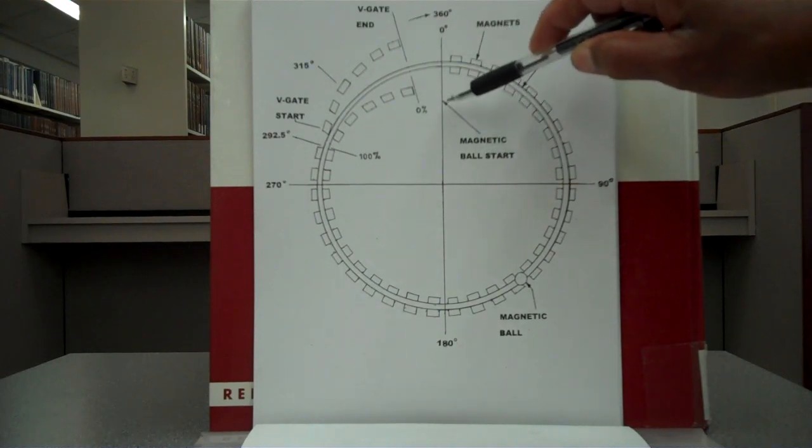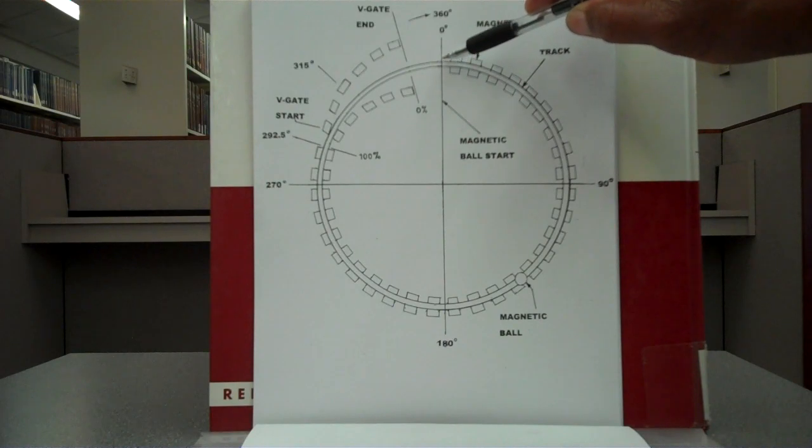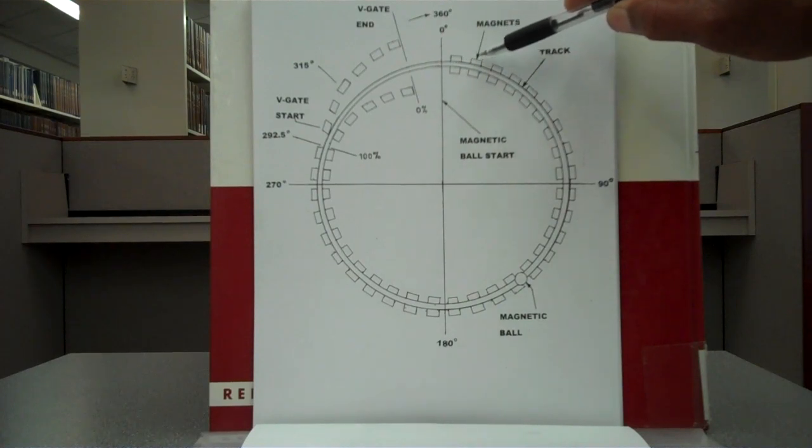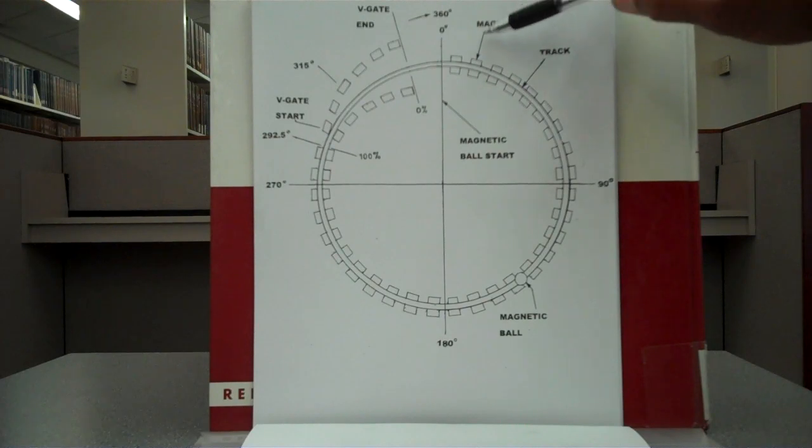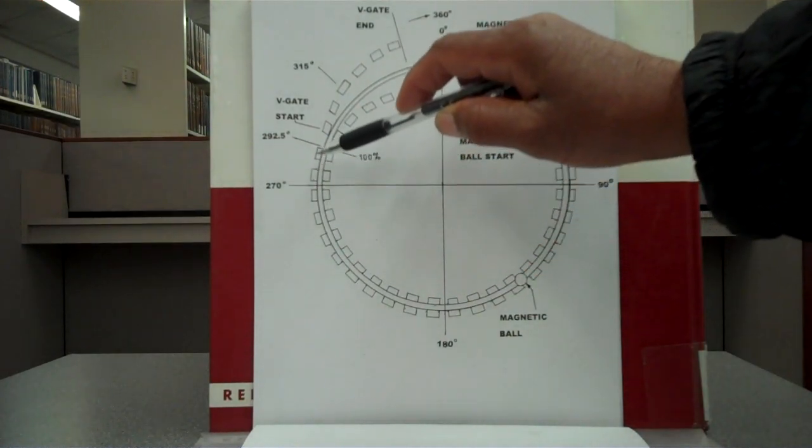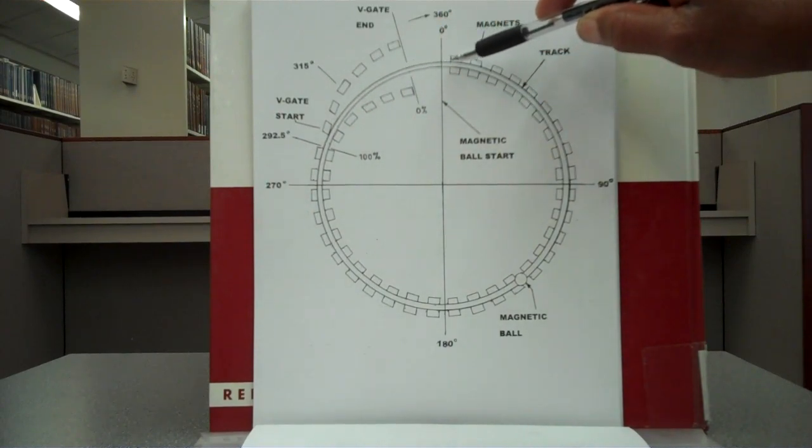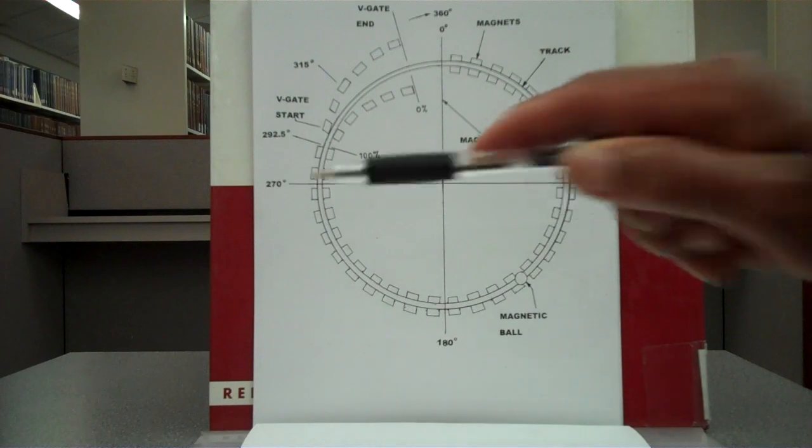The ball continues along the track until entering the accelerator at the starting point again. Here is the starting point at zero degrees. The ball is attracted into the track by the track magnet, goes all the way around, exits, and cycles around and around.